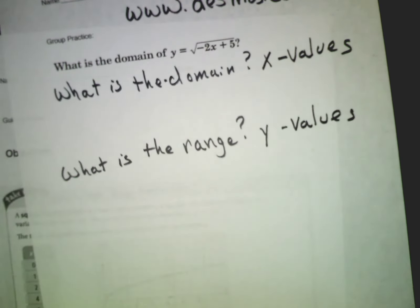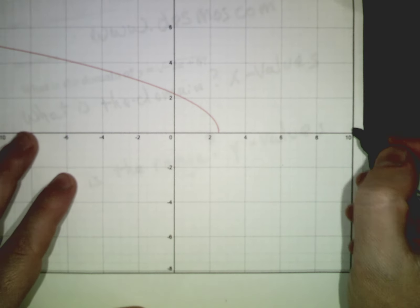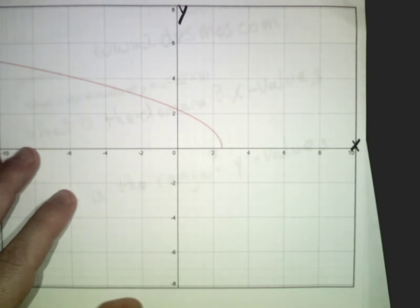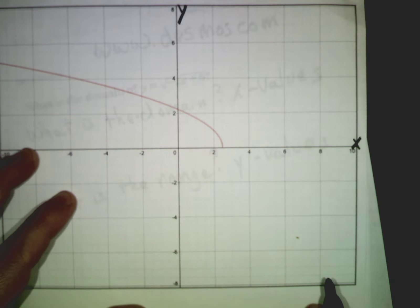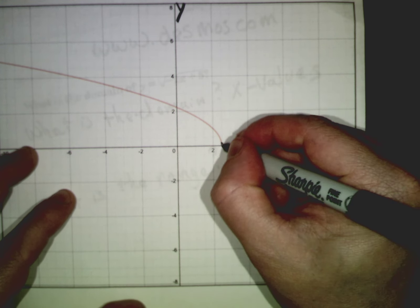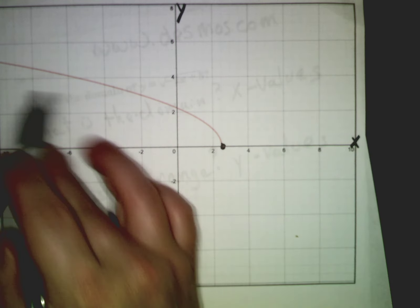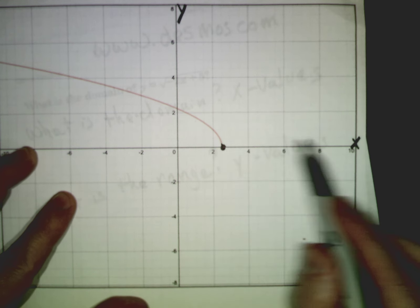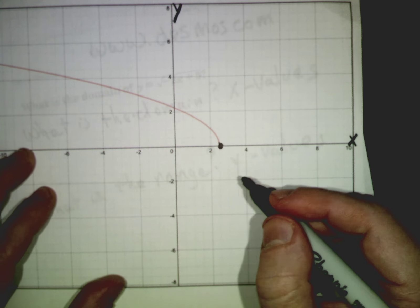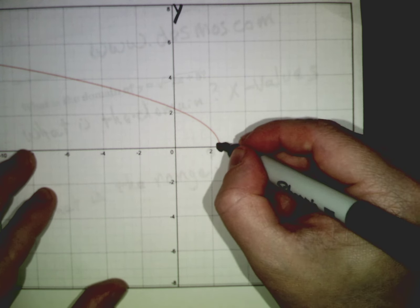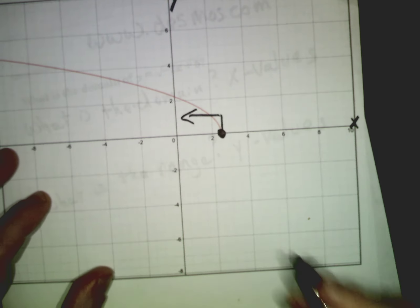All my numbers here are my x values. All my numbers along here are my y values. When I look at this function, the first thing I look is right here. This is where my x values start. This red graph stops right here on this mark. It doesn't go below it, and it doesn't go this way anymore either. It's only this way.